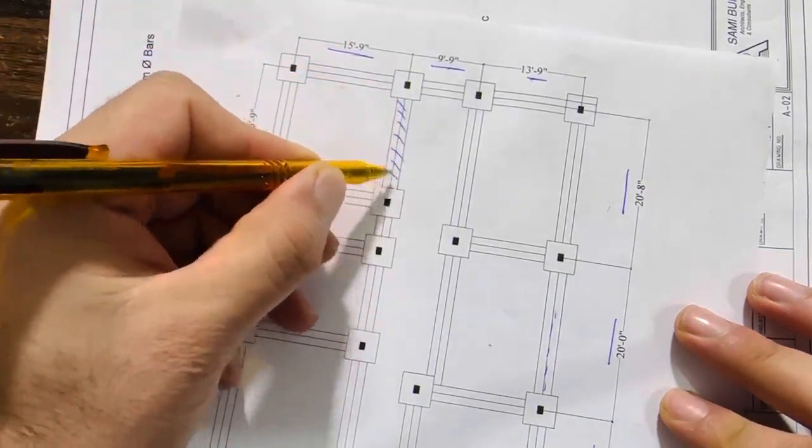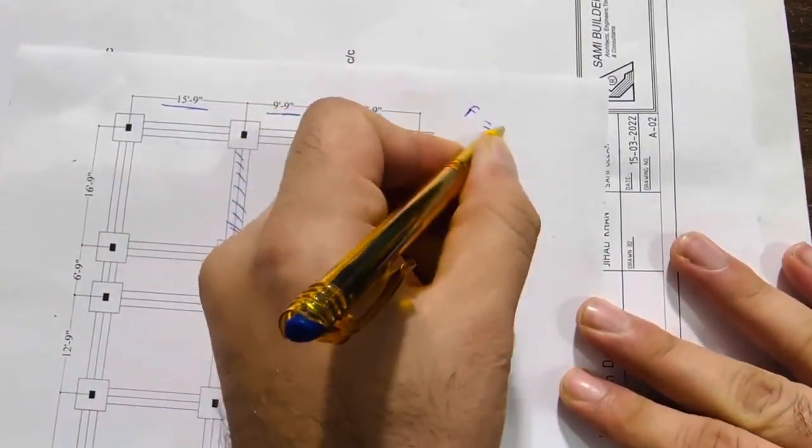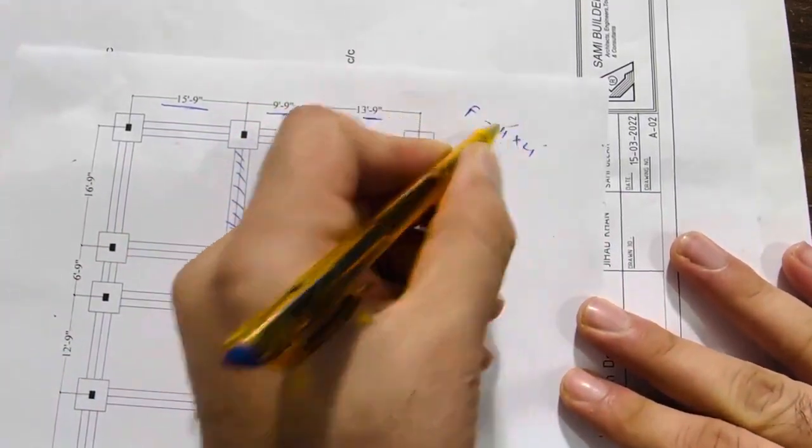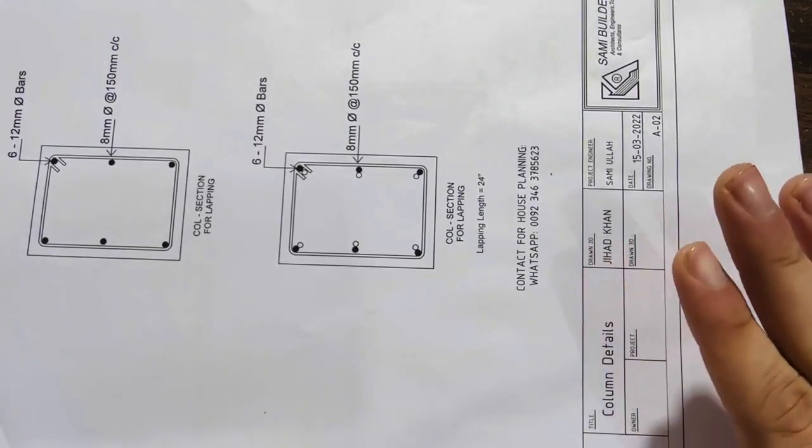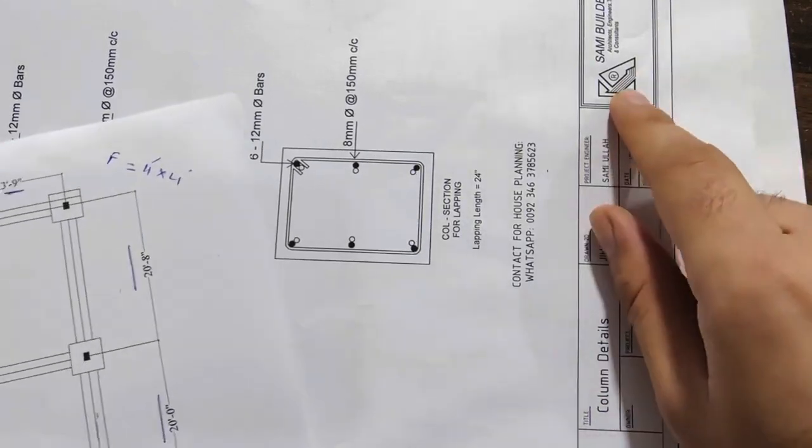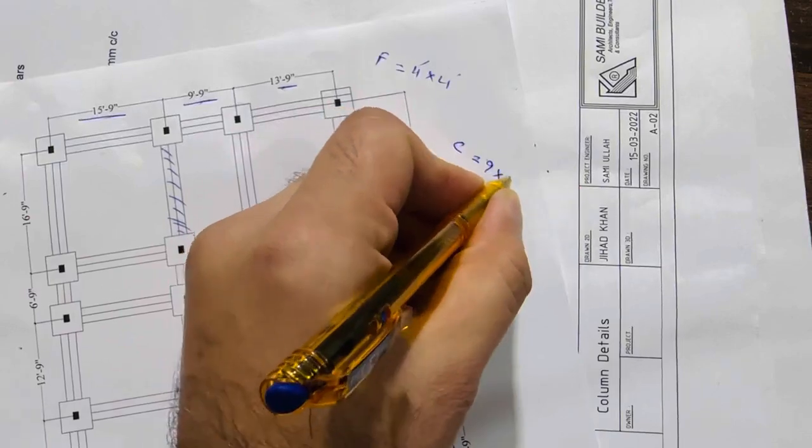First of all, I will tell you the footing size. The footing is 4 feet by 4 feet. Inside this, you can see the column size is 9 by 12 inches.